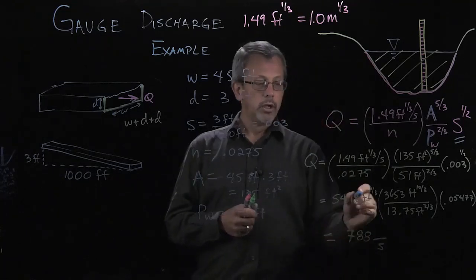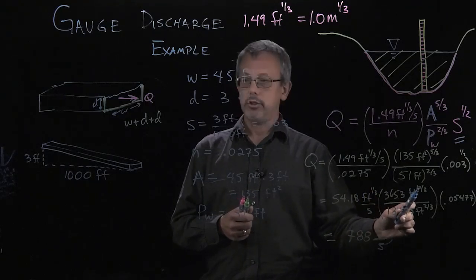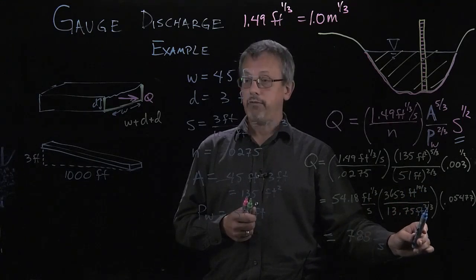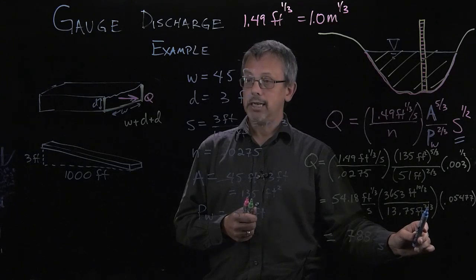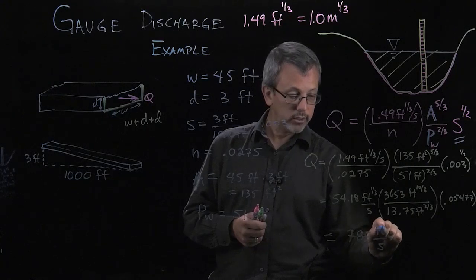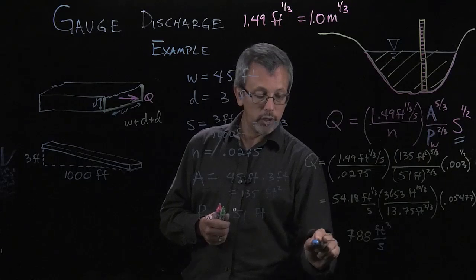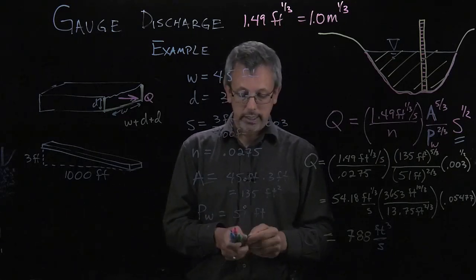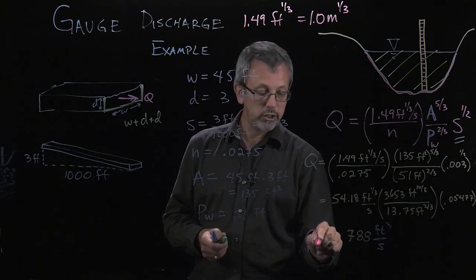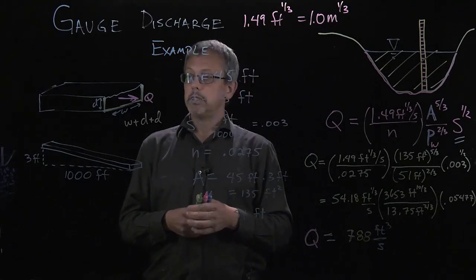But what are our other units? Well, we have foot to the 1 third plus feet to the 10 thirds, which is going to be feet to the 11 thirds. We're adding exponents. And then we divide by feet to the 2 thirds, which gives me feet to the 9 thirds. Well, feet to the 9 thirds is cubic feet, which is exactly the type of units we want for volume per time. So, our flow rate for this particular raceway in this situation is 788 cubic feet per second.